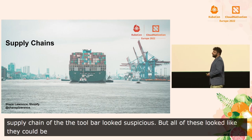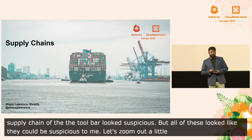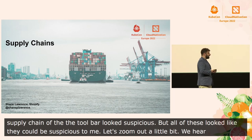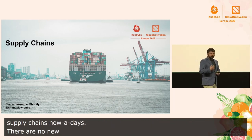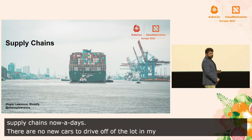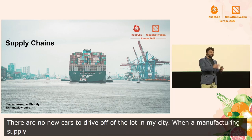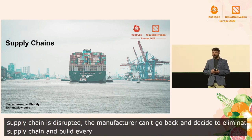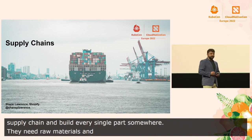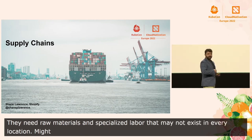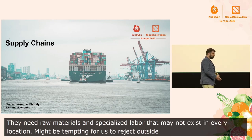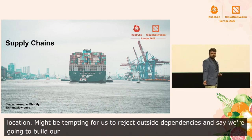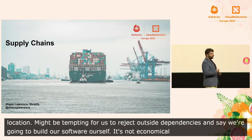We hear a lot about supply chains nowadays. I know it's why my washing machine was three months late and there are no new cars to drive off a lot in my city. But when a manufacturing supply chain is disrupted, the manufacturer can't just go back and decide to eliminate the supply chain and build every single part in a single factory. They need raw materials and specialized labor that may not exist in every location. It might be tempting for us to simply reject outside dependencies and say we're going to build all of our software ourselves. But it's not economical and it's not even safer.